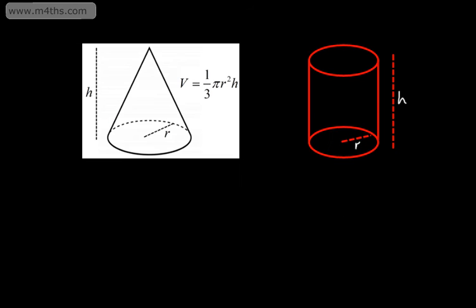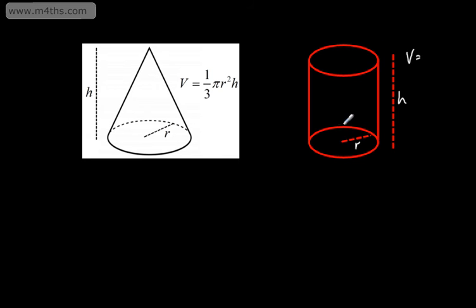The easiest way to look at this is to compare the volume of a cone and the volume of a cylinder. If we have a cylinder, to find the volume, we find the area of the base, which is just the circle, and multiply it by the perpendicular height. Perpendicular simply means that these two lengths are at right angles. So the volume of this cylinder, which is a prism as it has a constant cross-section, will be pi r squared multiplied by the height h.